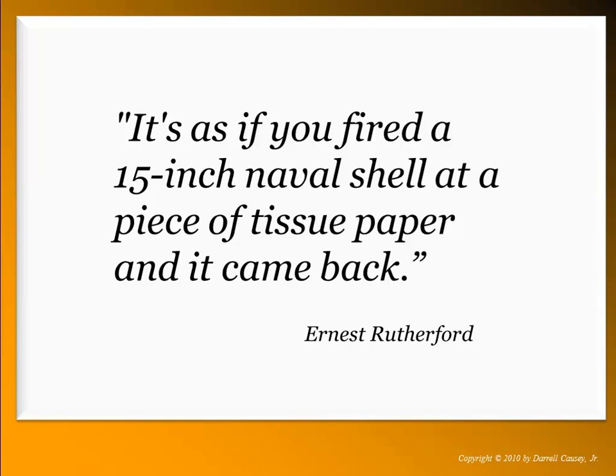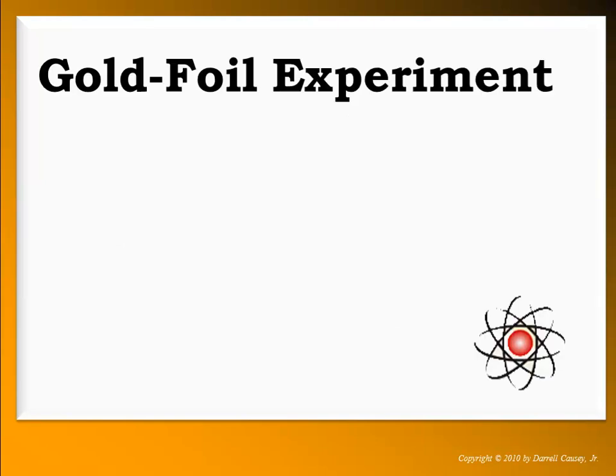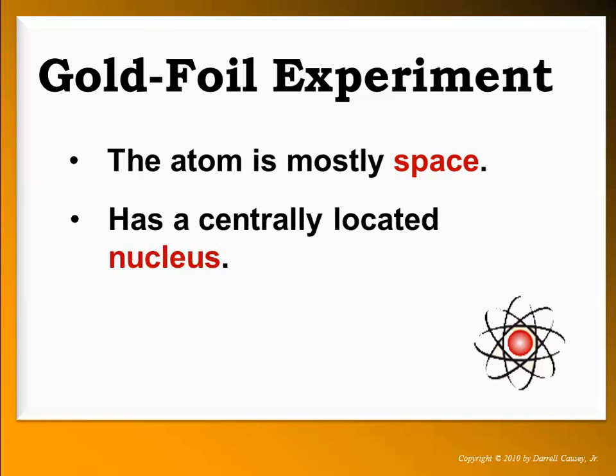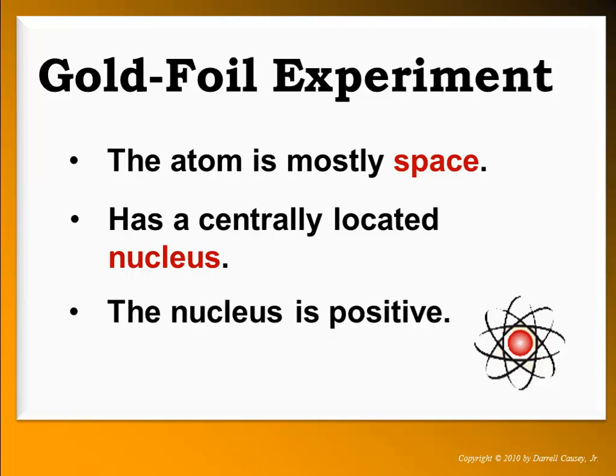And of course this is gold foil, so we know today that's a pretty large nucleus. It was surprising to them at the time, but it turns out today it's what we call the nucleus. We learned three things from the gold foil experiment: the atom is mostly space, it has a centrally located nucleus, and the nucleus is positive.